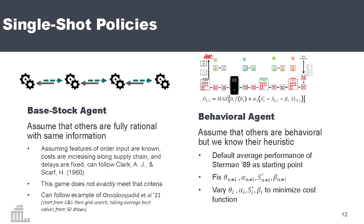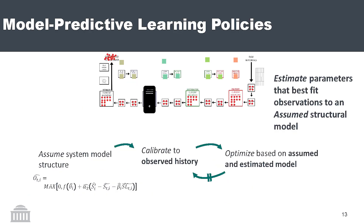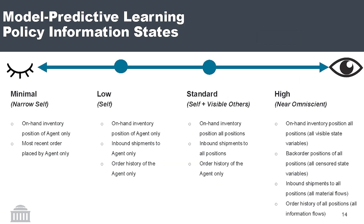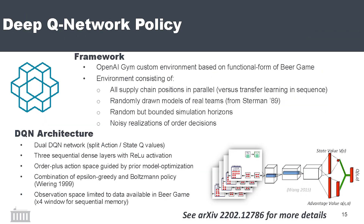Do you have a single-shot policy — walking in knowing your supply chain setup and setting your base stock policy at five? Or do we use a model predictive setup where I calibrate to my environment, update, and learn? Within that space, we have the idea of minimal information — if we're updating, I only know about myself — versus near-omniscient information on the other side. And then finally, we have our neural net as an upper example of complexity.